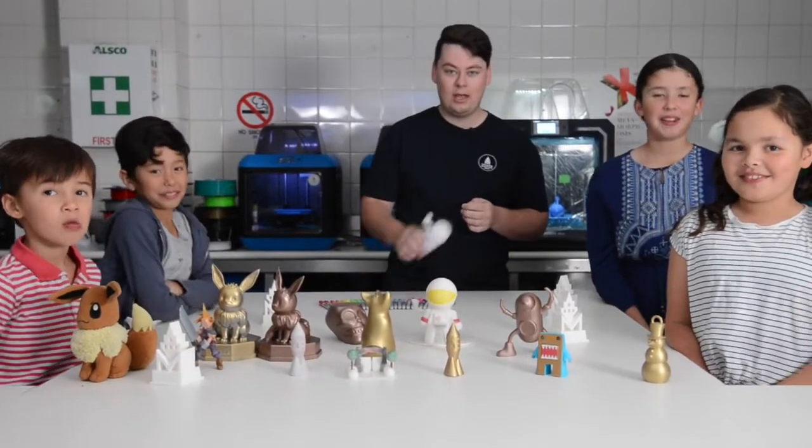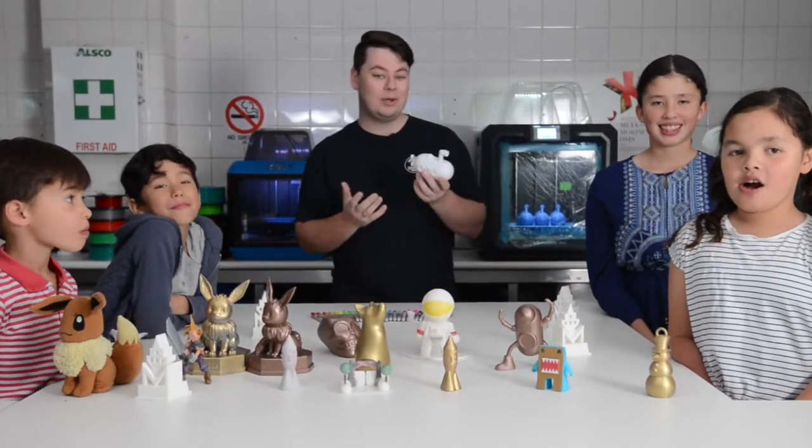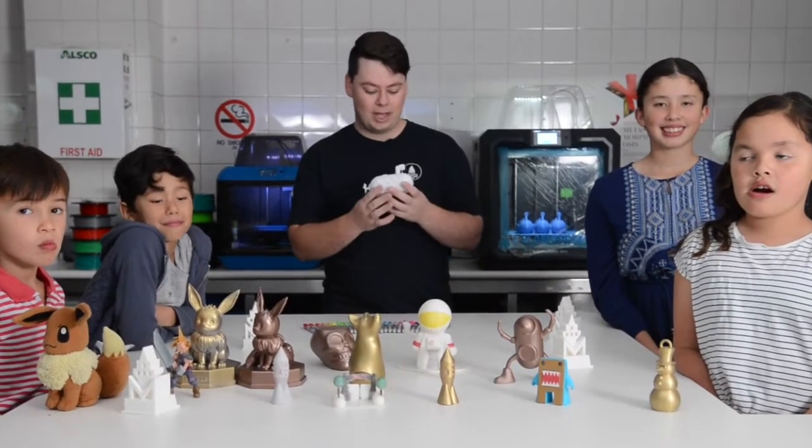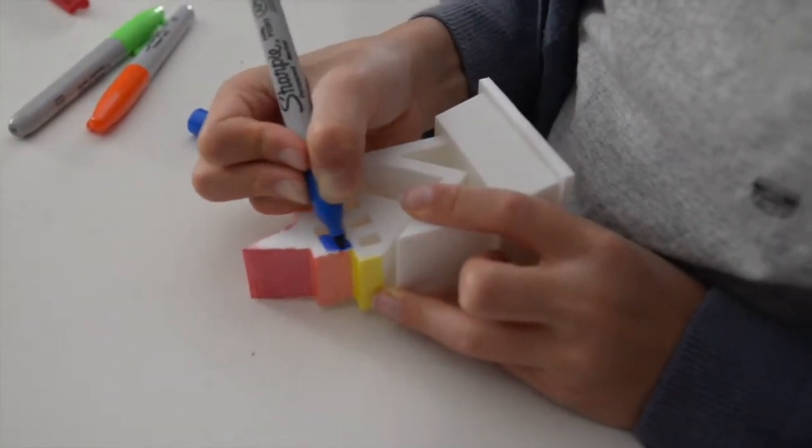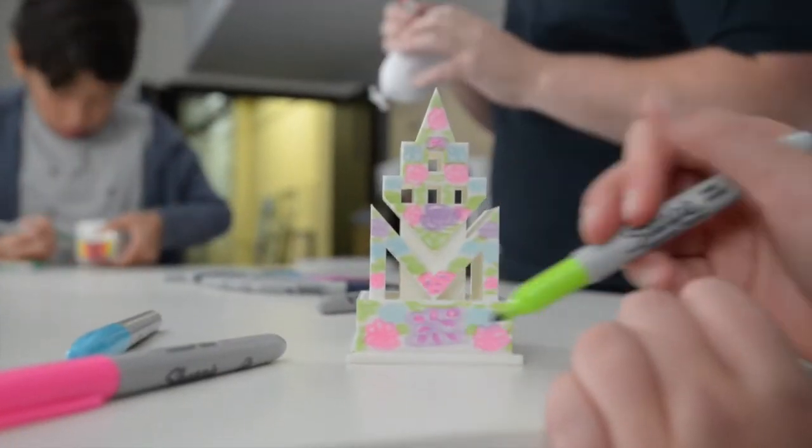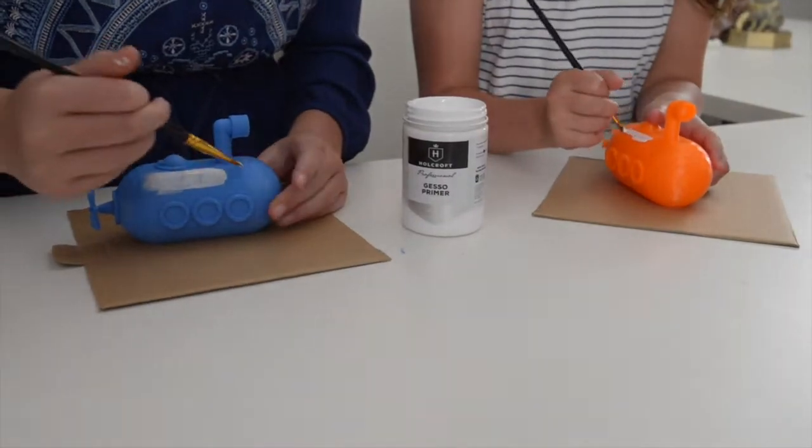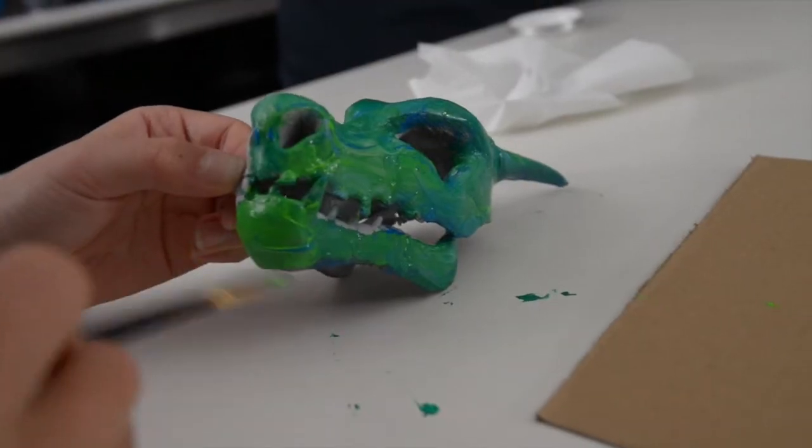Today we're going to be showing you how to finish some of your otherwise maybe boring 3D prints. So we're going to be doing two techniques. The first one is just using Sharpies to color in any of the prints, and then the second is to prime it with a primer and then add a little bit of acrylic paint.